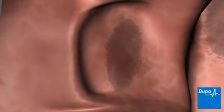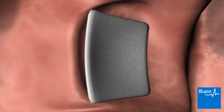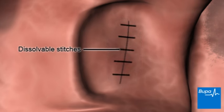The surgeon will press a gauze pad on the adenoid and tonsil area. Here we show pressure being applied to stop the bleeding.